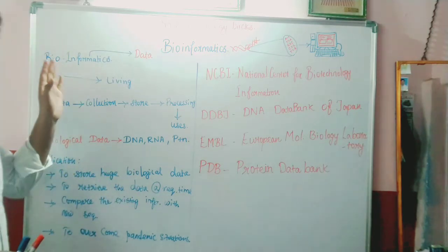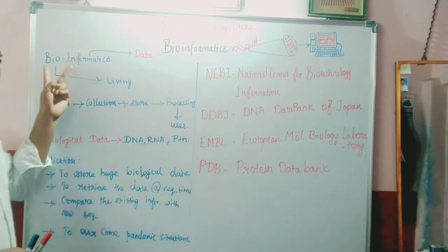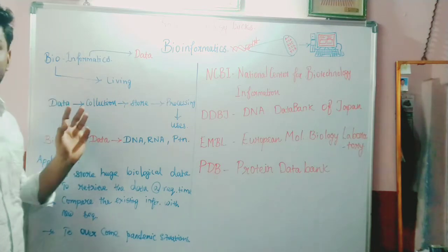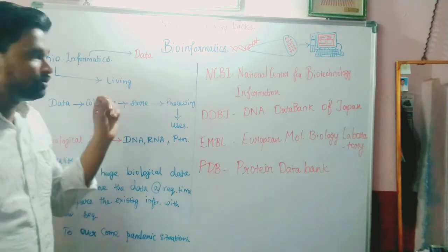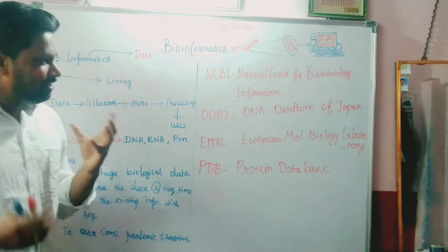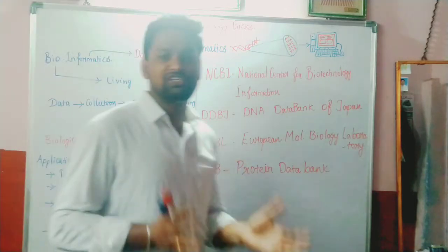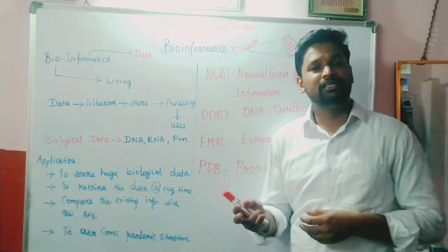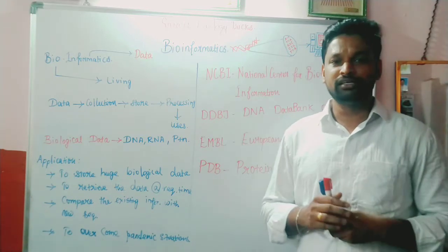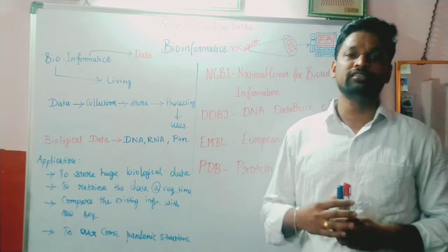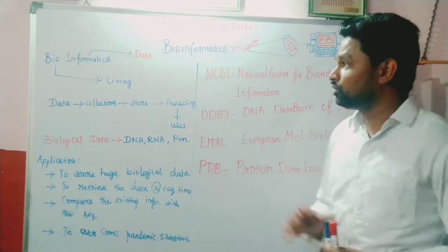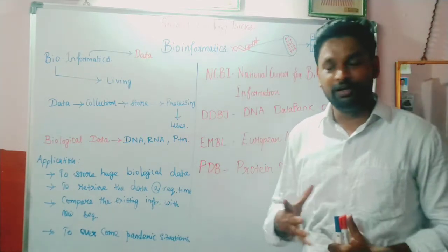What is the meaning of bioinformatics? The term can be separated into two terms: bio and informatics. Bio means living, as we know very well. Informatics means data — data which is collected from biological organisms. That is called information. The information may be DNA, RNA, protein, or in some cases enzymes and the structure of enzymes. Those things are also considered as biological data.